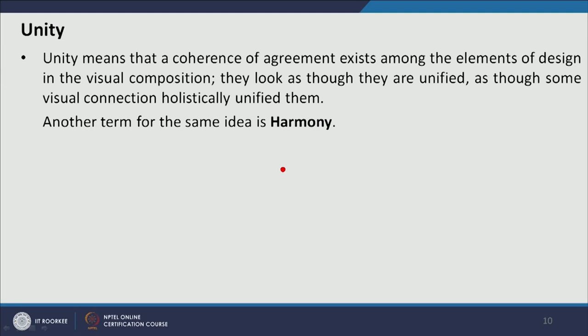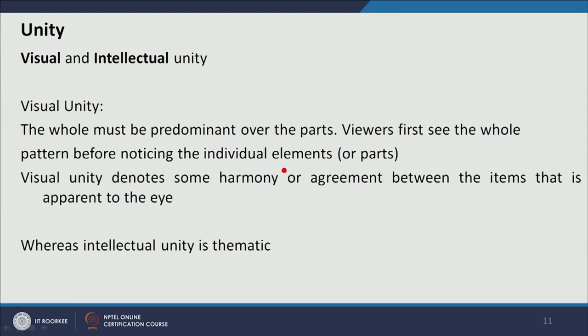The elements look as though they are unified, as though some visual connection is there in the holistic composition. Another term for unity is harmony. We should not be confused between visual and intellectual unity. Visual unity is when we visually connect different elements of design. Suppose there are circles — smaller circles and bigger circles — but there is unity because of the element shape, which is the circle. Similarly, if there is unity in texture, line quality, or other elements of design, we connect the composition.